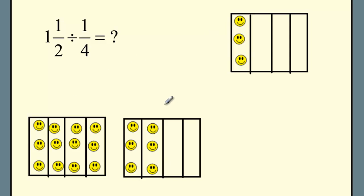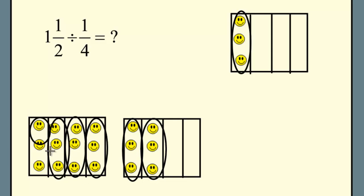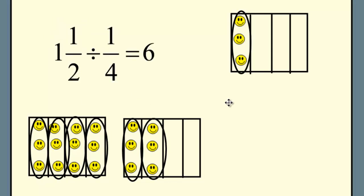The best way to find the answer is to divide these blocks into fourths. Let's color in our one and one half — all four vertical bars for the one, and the two vertical bars for the half. I'm asking how many of these does it take to make that. It's going to take six. Using the oval tool: one group, a second group, a third, a fourth, a fifth, and a sixth. It takes six one-fourths to make one and a half, so I can make six strips.